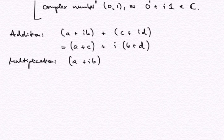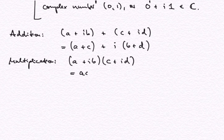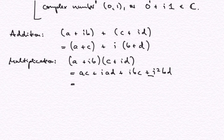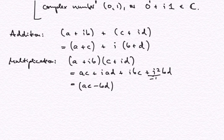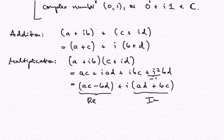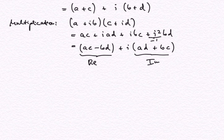Multiplication behaves a bit differently because of the rule that i squared is equal to minus 1. So if we multiply (a + ib) times (c + id), we can multiply this expression out: we get ac plus i times ad plus i times bc plus i squared times bd. Now i squared is equal to minus 1, so this becomes ac minus bd plus i times (ad plus bc). This is the real part of the product, and this is the imaginary part of the product.